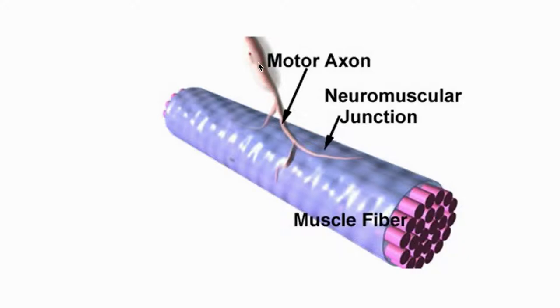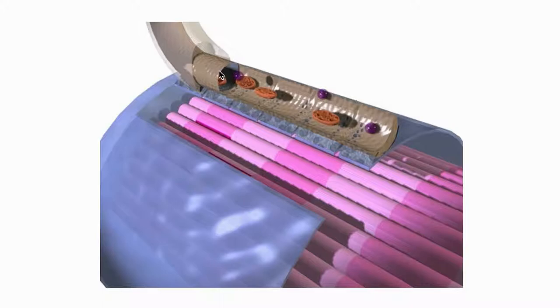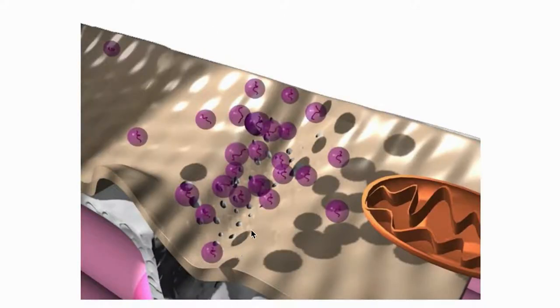The next slide illustrates key features of the structure of the neuromuscular junction synapse. Here is your motor axon, the cell body of which would be in the spinal cord; you see myelin, then the motor axon branches and runs along the muscle fibers. Here is an expanded view: the nerve terminal and the skeletal muscle with its contractile machinery. Blowing it up further, you see the membrane of the presynaptic motor neuron and the membrane of the postsynaptic muscle cell.